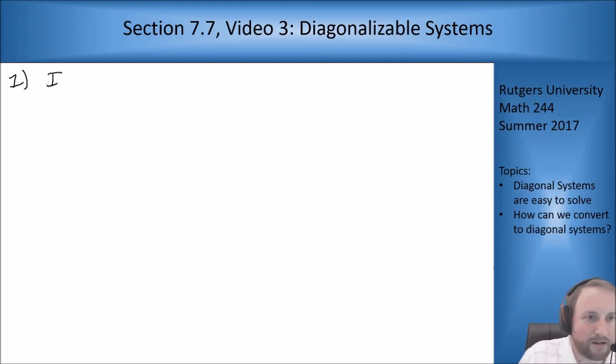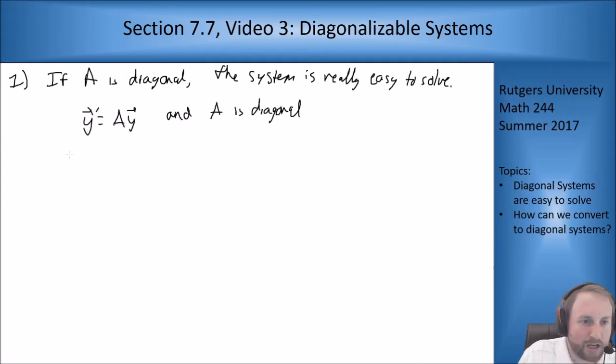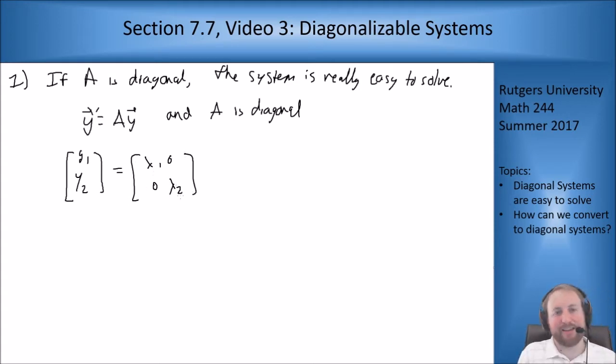Point one for this video: if A is diagonal, the system is really easy to solve. The idea is, say I have y prime equals Ay, and A is diagonal. So I'll write this out. Let's do a two by two. The idea is the same in higher dimensions. Lambda 1, 0, 0, lambda 2. This is what I mean by diagonal - there are only entries on the main diagonal from top left to bottom right and zeros everywhere else.